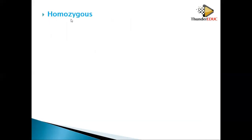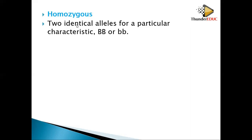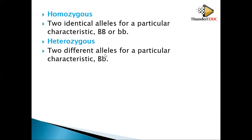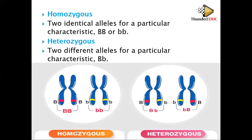Homozygous means the zygote has two identical alleles for a particular characteristic — can be homozygous dominant or homozygous recessive. Heterozygous means the zygote has different kinds of alleles, for example capital B and small b. In the picture, alleles are found at the same locus. Heterozygous has the same location but different alleles, while homozygous has the same location and the same alleles.